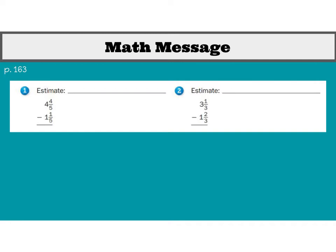So the first thing that we might want to do is take a look at the fact that both of these mixed numbers in this first problem happen to have the same denominator. So that's a good thing — that means we don't have to convert normally to something else. However, we are subtracting in this case. So if I'm going to make an estimate up here, which is what we need to do first, I'm going to be looking at my whole numbers — four minus one.